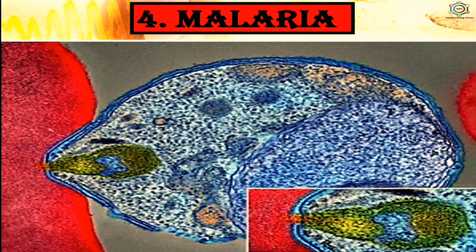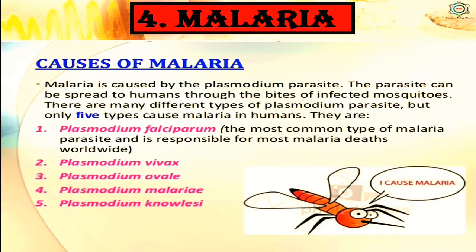Malaria is caused by the toxin produced in the human body by the malarial parasite Plasmodium. Malaria is caused by the Plasmodium parasite spread to humans through bites of infected mosquitoes. There are five types that cause malaria in humans: Plasmodium falciparum (the most common type, responsible for most malaria deaths worldwide), Plasmodium vivax, Plasmodium ovale, Plasmodium malariae, and Plasmodium knowlesi.